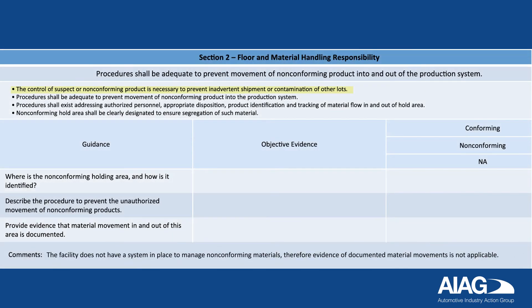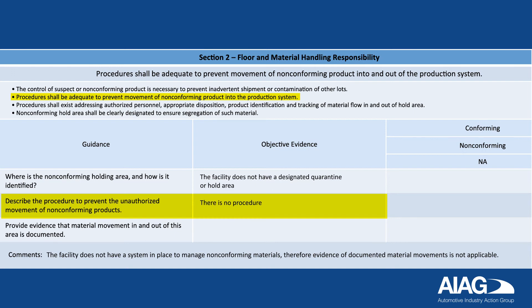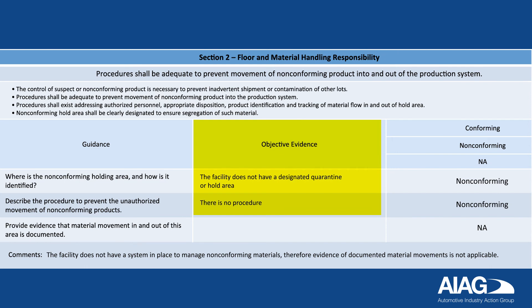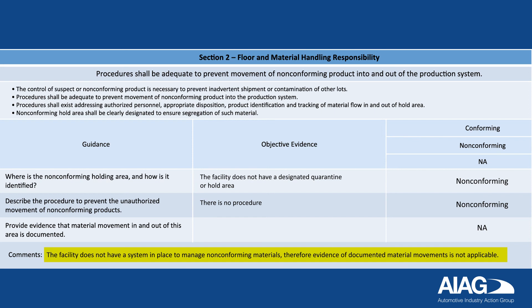Now let's look at Section 2. The control of suspect or non-conforming product is necessary to prevent inadvertent shipment or contamination of other lots. Procedures shall be adequate to prevent movement of non-conforming product into the production system. Procedures shall exist addressing authorized personnel, appropriate disposition, product identification, and tracking of material flow in and out of the hold area. The non-conforming hold area shall be clearly designated to ensure segregation of such material. In this example, the facility lacks the required hold area and procedure to prevent unauthorized movement of non-conforming products, earning a rating of non-conforming for those conditions. Because the facility does not have such a system in place, evidence of documented material movements is not applicable.